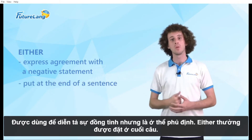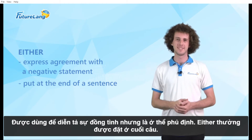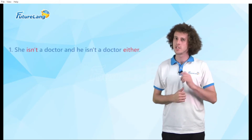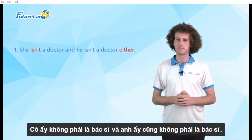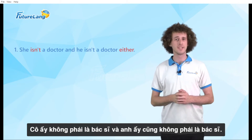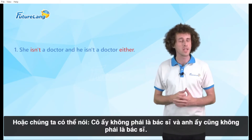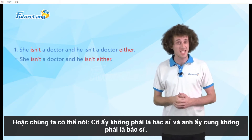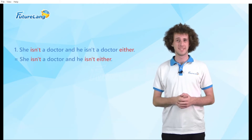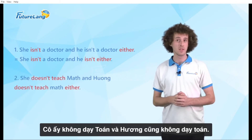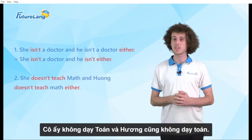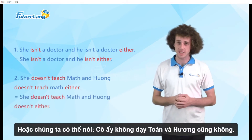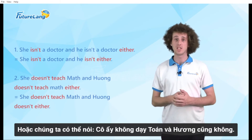'Either' is also often put at the end of a sentence. Let's see some examples: 'She isn't a doctor and he isn't a doctor either.' Or: 'She isn't a doctor and he isn't either.' Another example: 'She doesn't teach math and Huang doesn't teach math either.' Or: 'She doesn't teach math and Huang doesn't either.'